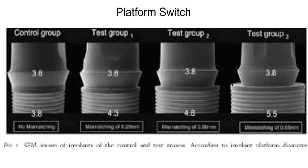Here's an example: all 3.8 mm prosthetics with different size implants — equal platform, a very small platform switch, medium platform switch, and a very large platform switch. One can imagine that the larger implant is thicker and more resistant to fractures. If you haven't experienced an implant fracture, it'll happen. I haven't seen any with modern implants, but I've seen them with the Coravin implants popular in the early 2000s and 90s. The alloys are a lot better than they ever have been. If we have an option to create a more biomechanically and biologically sound apparatus, why not do it?